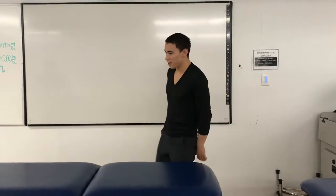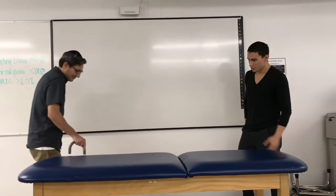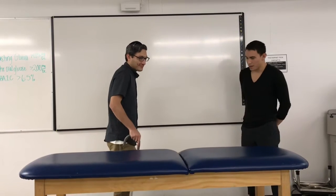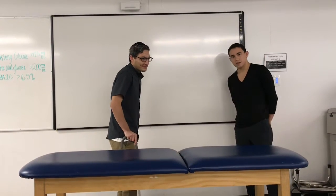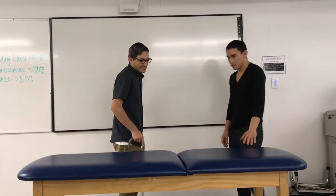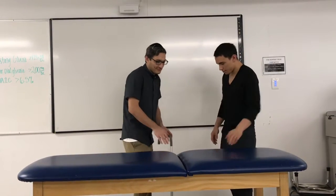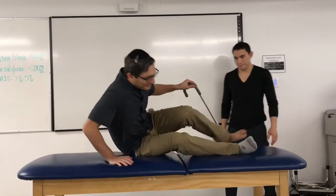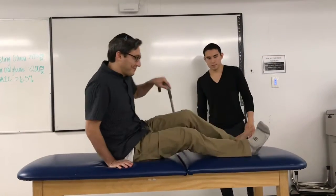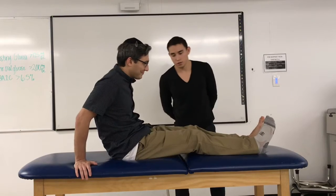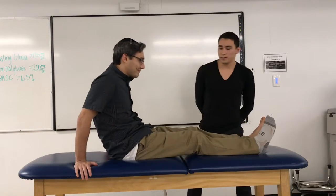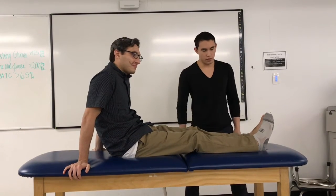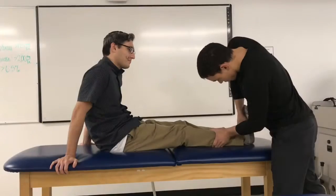So here he comes. As you can see, he's a little bit limited in his balance and ambulates with a straight cane. Let's have a seat. His upper extremity and lower extremity strength is within normal limits, but let's take a look at his ankle specifically.